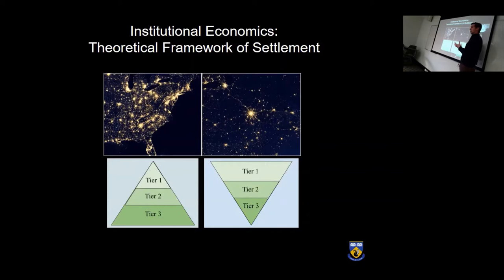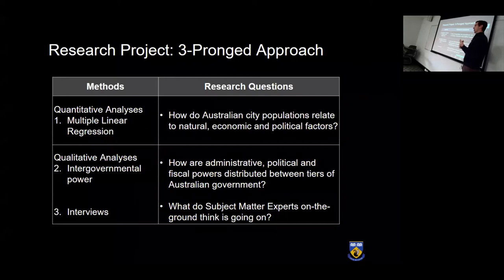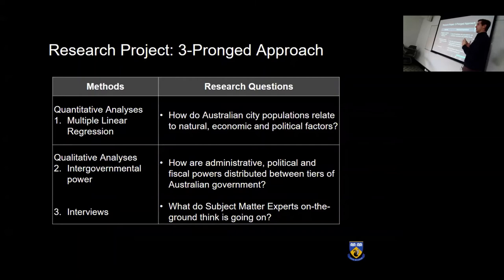The way we're answering this question uses three methods. First, I ran quantitative analyses — multiple linear regression — looking for correlations between city populations and natural, economic, and political factors over time. Second, I conducted a qualitative content analysis to examine how intergovernmental power is configured between Australia's tiers of government. Third, I conducted a series of interviews with subject matter experts in regional development to hear what they think is driving primacy.